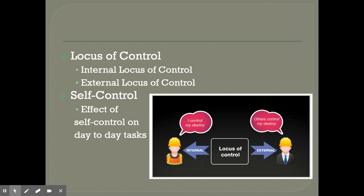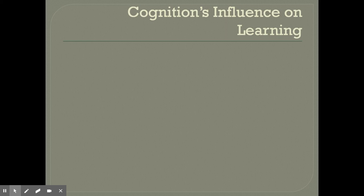Self-control is something we have to learn, and it's really important because it allows us to tone down our impulses. Sometimes we feel like we just want to do something, yet we have an internal state that says no. Most kids start off with very little self-control, but those who develop a high amount of self-control are often more accomplished in day-to-day tasks — more able to stick to what they need to do rather than act impulsively. Finally, we look at cognition's influence on learning.